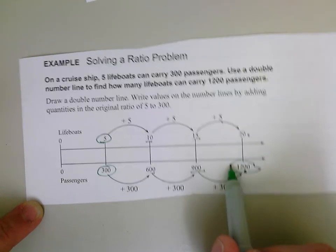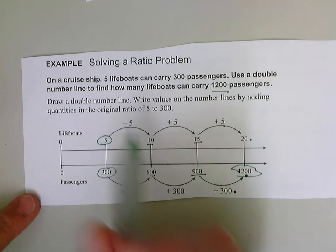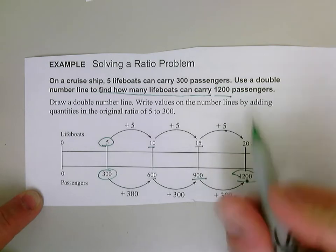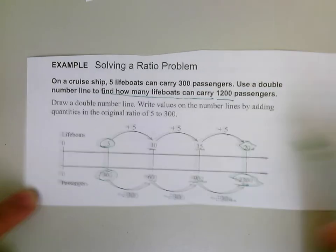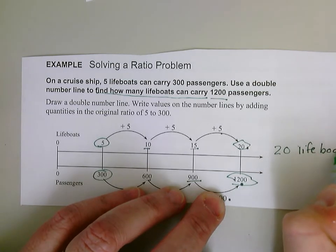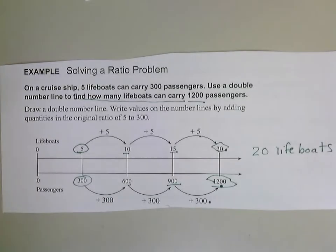So here's the 1,200 passengers that I needed to get to. And to find, my question was how many lifeboats can carry 1,200 passengers. So how many lifeboats that is is 20. I can have 20 lifeboats. 20 lifeboats will carry 1,200 passengers. So let's try a problem on our own.